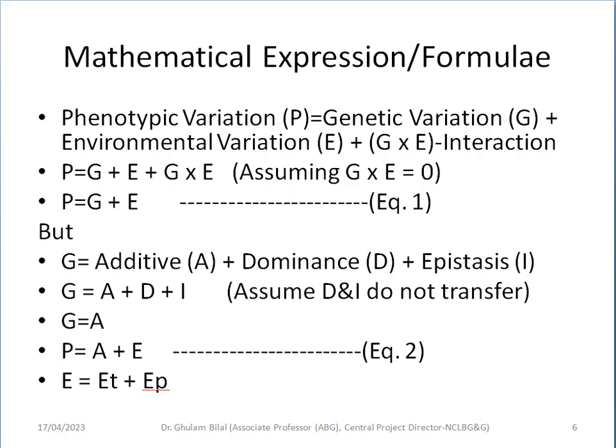For example, we have a typical equation: phenotypic variation equals genetic variation plus environmental variation plus G-by-E interaction. Suppose P equals G plus E plus GE, and we assume G-by-E is negligible or zero, so our equation becomes P equals G plus E. Genetic variance can be further subdivided into additive genetic variance, dominance, and epistatic variance — so G equals A plus D plus I. Assuming dominance and epistasis do not transfer to the next generation, they are zeroed out, so G becomes equal to A. Our equation becomes P equals A plus E. We can further partition E into ET, temporary environment, and EP, permanent environment. Temporary environment is herd-year-season of calving or birth.